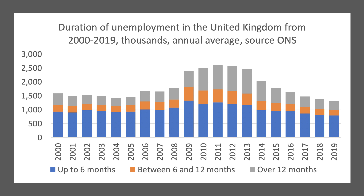This chart shows annual data from 2000 through to 2019 and tries to track the duration of unemployment in the UK. The grey area at the top of this histogram shows people who've been out of work for at least a year. That picked up quite sharply in the last recession and has been coming down. We hope that can be controlled in the aftermath of the pandemic, but it is a fear for the next couple of years.